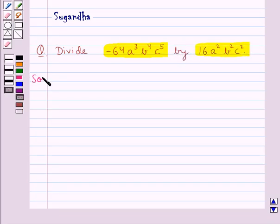Let's move on to the solution. In this question we are supposed to divide one monomial by the other monomial. We have to divide -64a³b⁴c⁵ by the other monomial 16a²b²